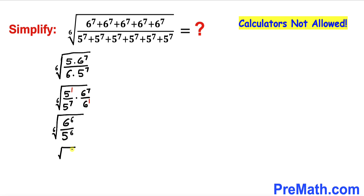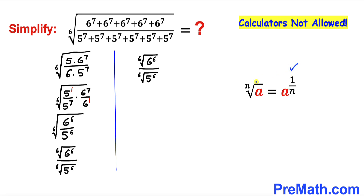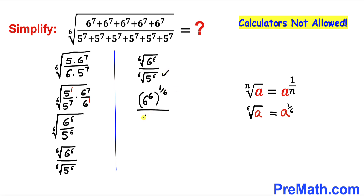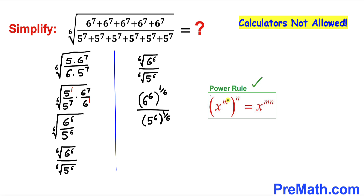We can break this down as the 6th root of 6^6 divided by the 6th root of 5^6. Recalling the basic rule that the nth root of a equals a^(1/n), the 6th root of a equals a^(1/6). Applying this property, the numerator becomes 6^6 whole power 1/6, and the denominator becomes 5^6 whole power 1/6. Using the power rule of exponents, we multiply the nested exponents: 6 times 1/6 equals 1 in both cases.